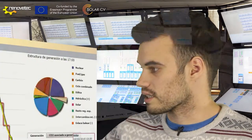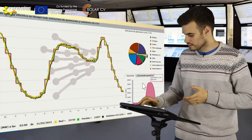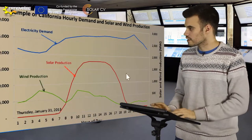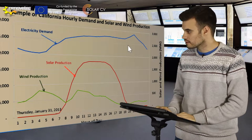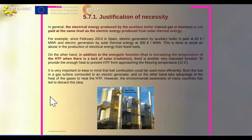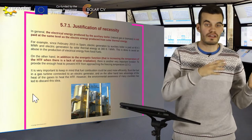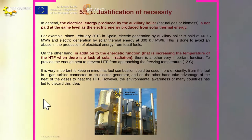Here we can see an example of electrical energy in Spain. This shows the electricity demand, solar production, and wind production. As we saw, the electrical production and electrical consumption must match at the same moment. However, an auxiliary boiler is going to produce more energy than wind energy or solar energy, so it is not paid at the same level.